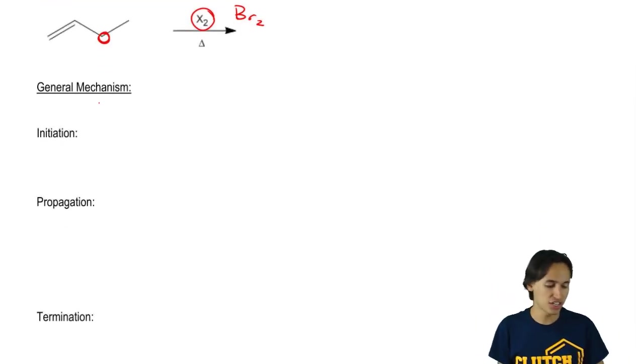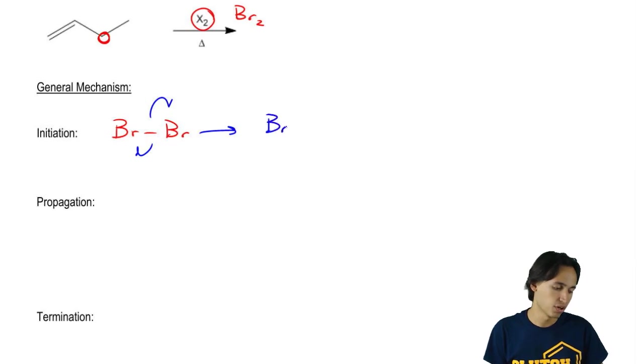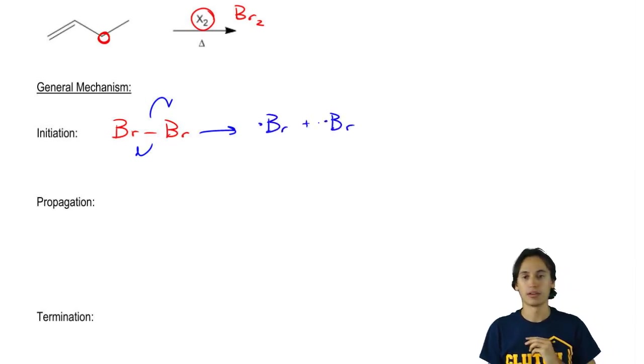First, my initiation step is really easy. We're just going to use Br2. Where do those first arrows go? We would just make radicals there and there. So now what I'm going to get is Br radical plus Br radical. That's it for our initiation. We have our target radical.